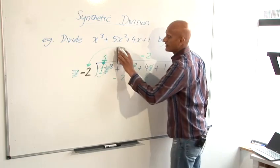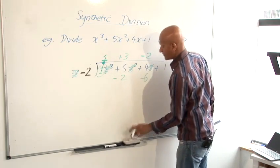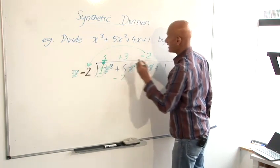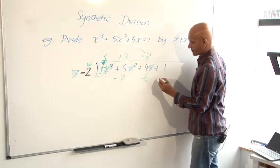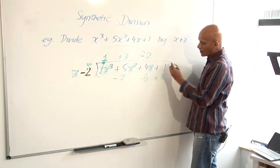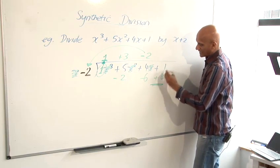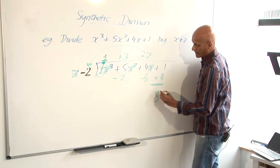And then again, the same step, multiplying it into there. Minus 2 times minus 2 gives me plus 4. Now, there are no more digits at the end here, so I'm just going to stop here by adding these at the bottom and put my 5 here.